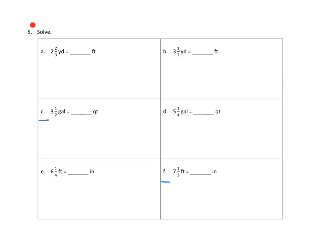Let's take a look at problem number five. Directions couldn't be simpler: solve. Let's take a look at two problems in problem number five. Let's look at 5C. They tell us we have three and a half gallons—how many quarts is that?